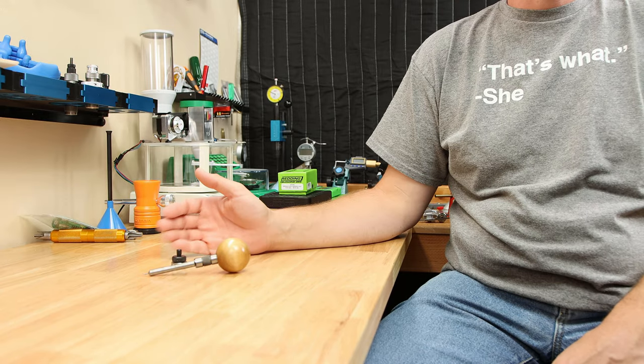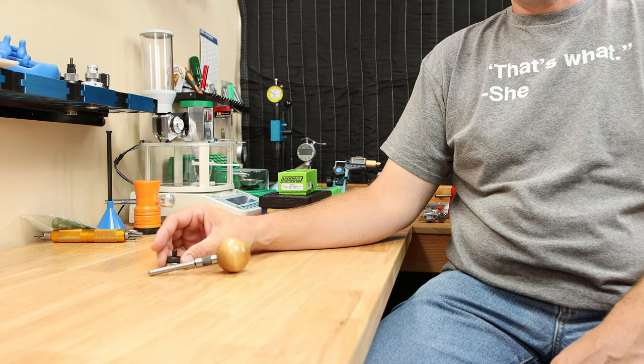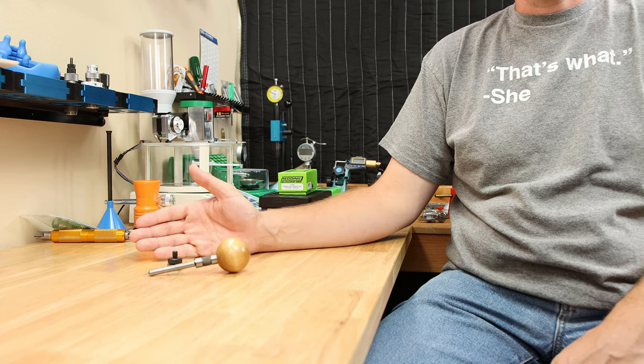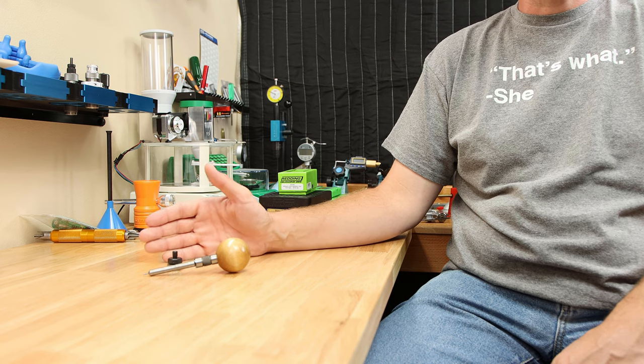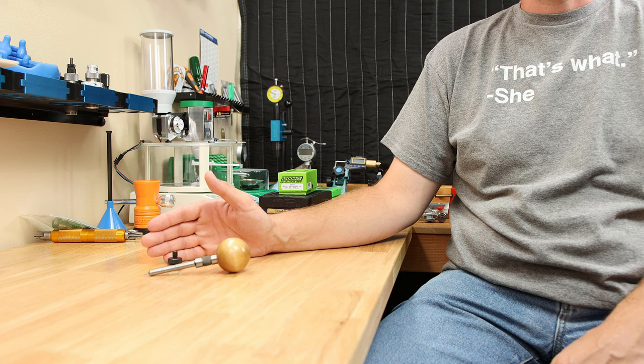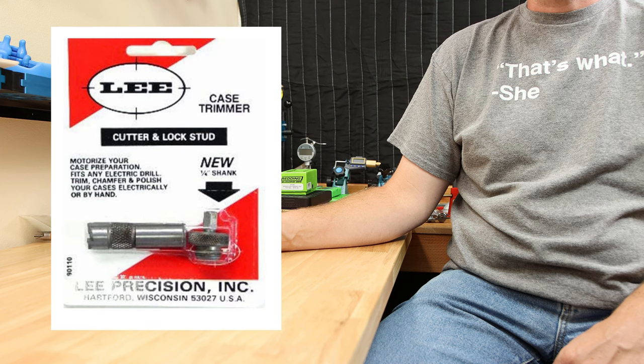Our next tool here most of you pistol guys can skip. This is a Lee Cutter and Lock Stud. After we've sized our cases, if you're not reloading for pistol, there's a good chance you're going to need to trim them. And this is one of the most affordable methods of doing it. Is it the best way? Probably not, but it is probably the least expensive. The Lee Cutter and Lock Stud come as a kit, however, I would recommend getting the ball cutter because it's just so much easier on your hand.